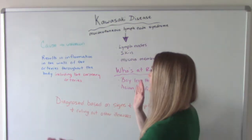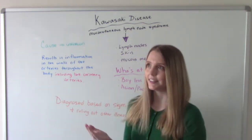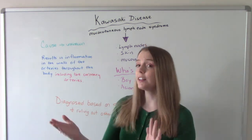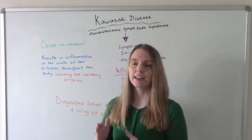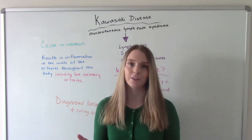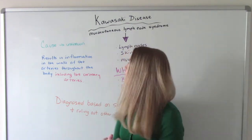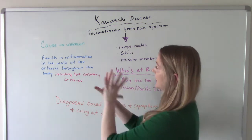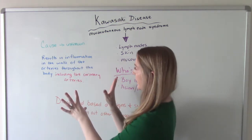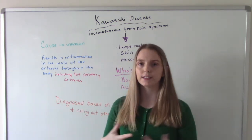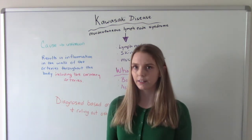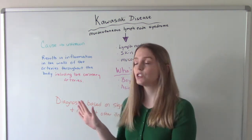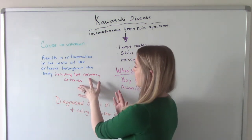The cause, unfortunately, is unknown. We don't know what causes this illness, but a good thing about it is it actually is pretty rare — it doesn't happen very often. What happens when a child gets this is there is inflammation in the walls of the arteries throughout the entire body, but our biggest concern is for those coronary arteries.